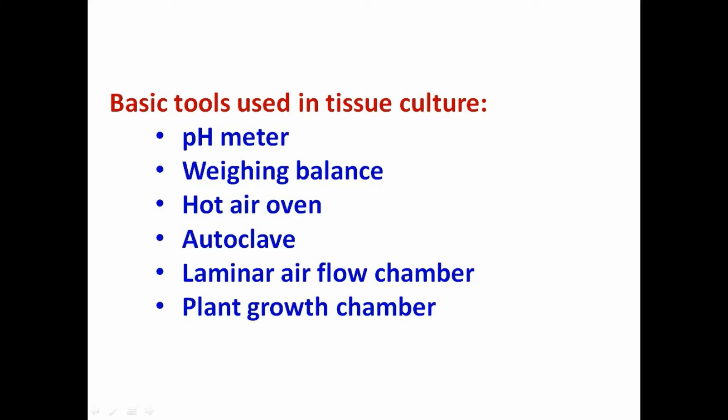Number three is the hot air oven, which is used for drying the glassware used in plant tissue culture. Number four is the autoclave, which is used to sterilize culture medium and glassware. Sterilization of the medium is carried out by applying moist heat at 121 degrees centigrade.